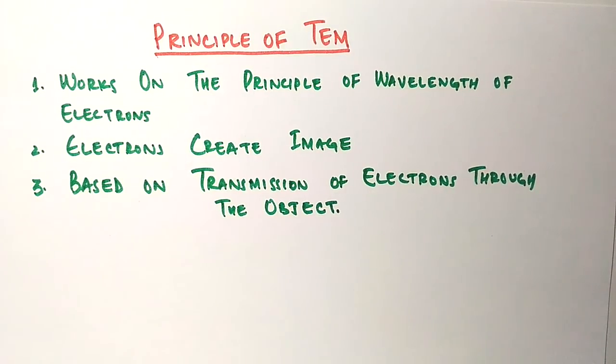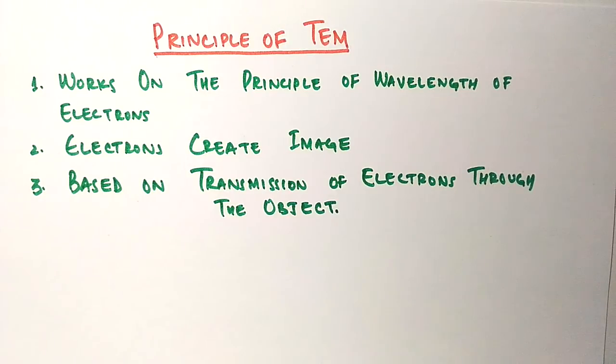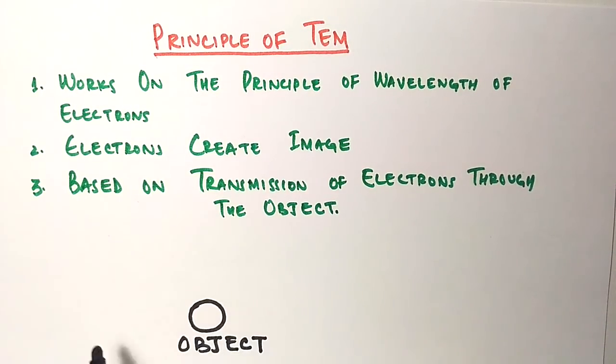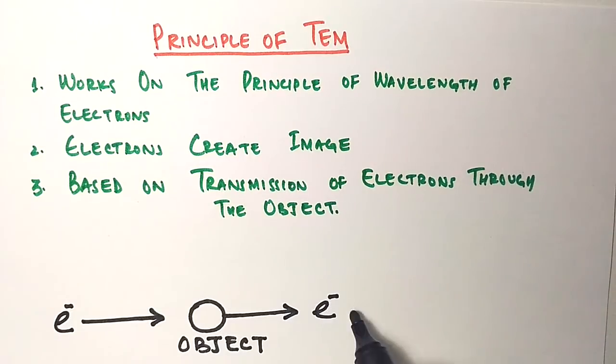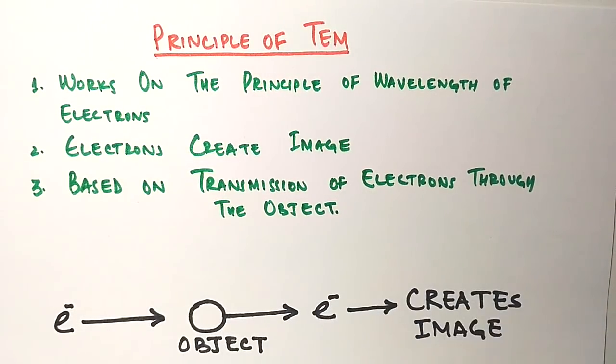Some electrons get reflected back or scattered, and these do not add to image formation. Rather, the electrons which go through the object create the image on the fluorescent screen. If we draw a diagram, the electrons that are transmitted through the object create the image.